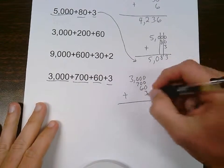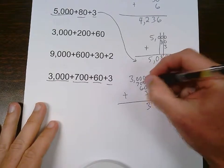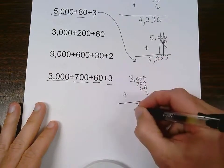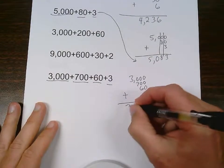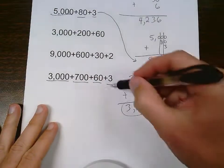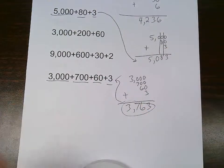0 plus 0 plus 0 plus 3, 3. 0 plus 0 plus 6, 6. 0 plus 7, 7. Bring down my comma, and bring down my 3. 3,763 is the standard form of that expanded form number.